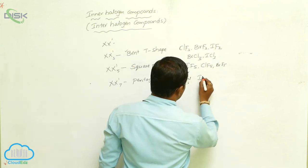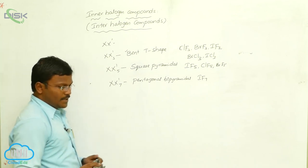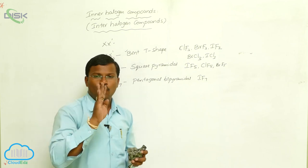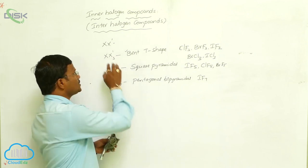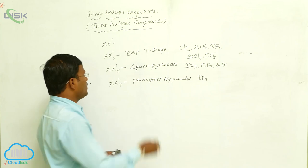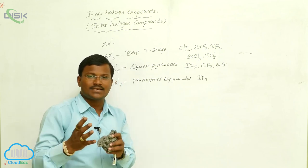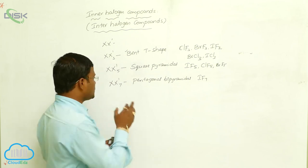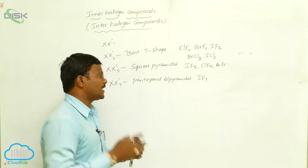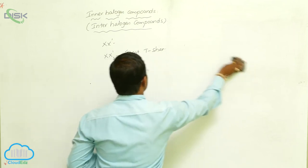The example for XX'7 is IF7. To summarize: when two different types of halogens react with each other, they produce four types of Inter Halogen Compounds represented as XX', XX'3, XX'5, and XX'7, where X is the halogen atom with bigger atomic size or less electronegativity. This concludes the concepts related to 17th group elements and Inter Halogen Compounds.